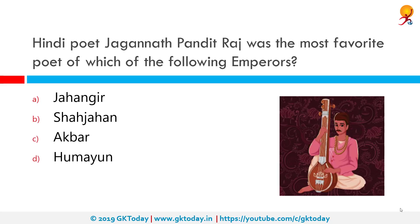Hindi poet Jagannath Pandit Raj was the most favorite poet of which of the following emperors? The correct answer is Shah Jahan. He was a famous poet and literary critic who lived in the 17th century during the Mughal reign.